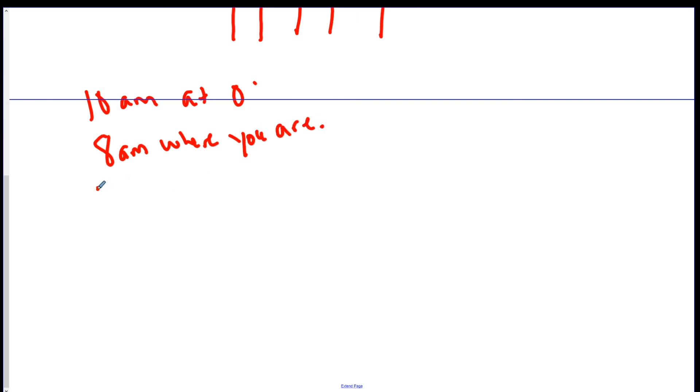What is your longitude? Let's see if you can get an answer, and then I'll go over how to do it. Okay. So it's 10 a.m. at 0 degrees. So we're going to draw a line, 0 degrees. It's 10 a.m.